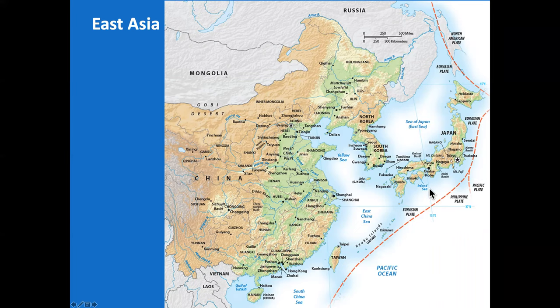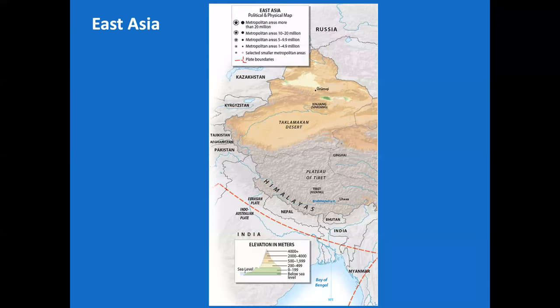Big cities include Shanghai, Beijing, Seoul, Tokyo, and Hong Kong. The further west you go in China, the smaller those big cities are. The westernmost part of the region — the Tibetan Plateau, Taklamakan Desert, and Gobi Desert — really belongs to all the adjacent regions, hence the analogy of a wheel with many spokes coming out of it.